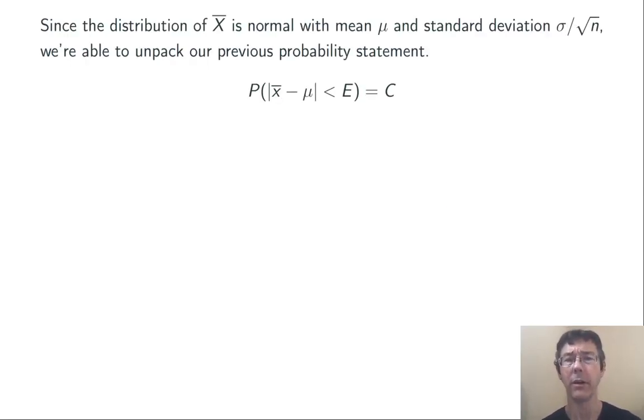Since the distribution of x bar is normal, with mean mu and standard deviation sigma over root n, we're able to unpack the previous probability statement that we made. P of the absolute value x bar minus mu less than E equals C.